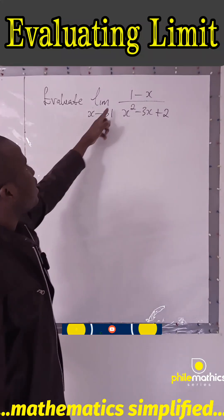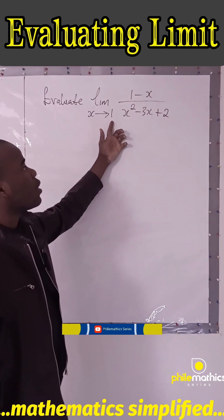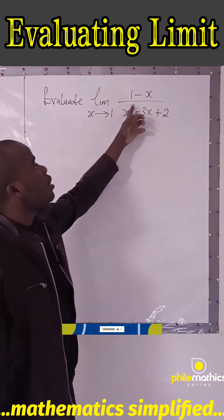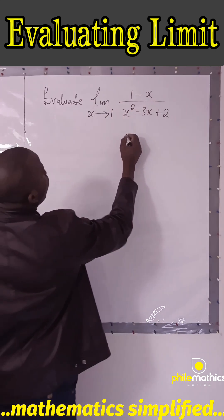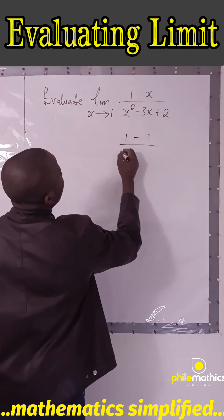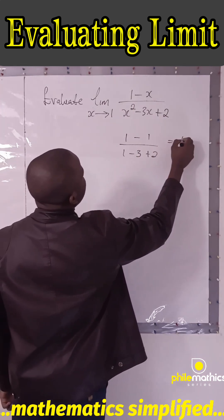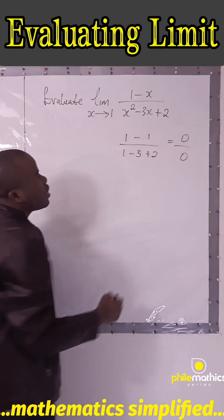We are asked to evaluate the limit of this rational function as x approaches one. The first thing you want to do is substitute one for x. If we do that, we'll have one minus one over one minus three plus two. One minus one is zero and three minus three is zero.